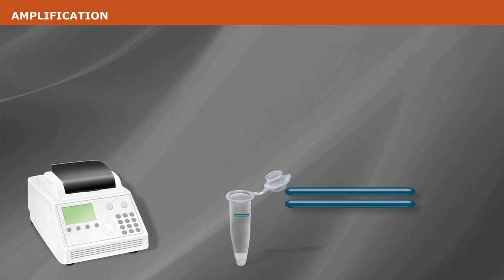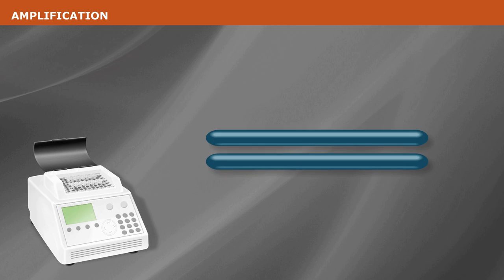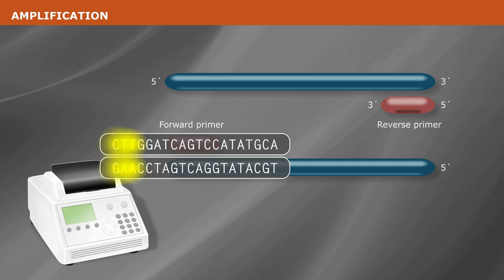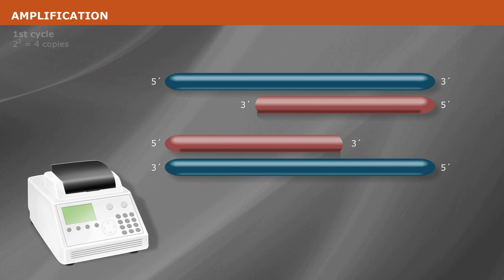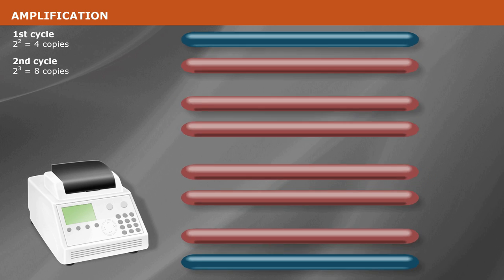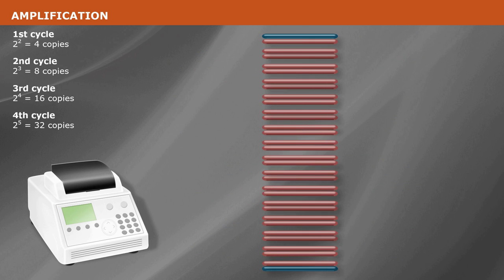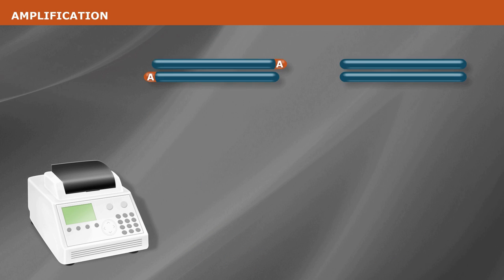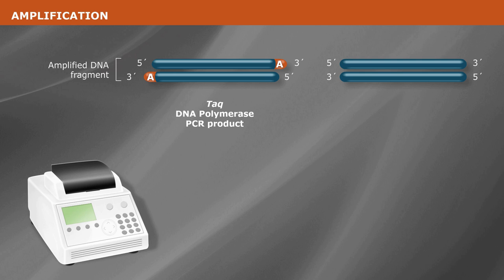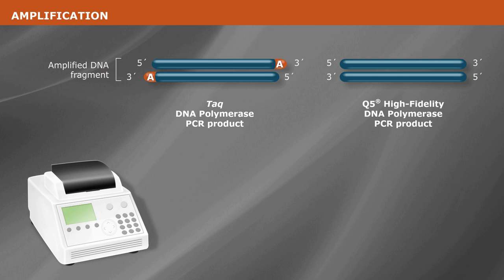Begin by amplifying the DNA fragment of interest with a polymerase using primers that are complementary to the DNA sequence of interest. With each cycle, the resulting DNA is amplified exponentially. The resulting amplified DNA will have either a single A overhang if TAC DNA polymerase was used, or a blunt end if a high fidelity polymerase such as Q5 high fidelity DNA polymerase was used.